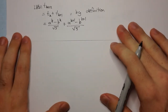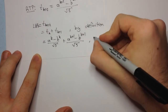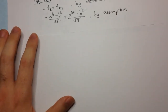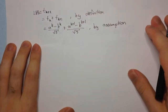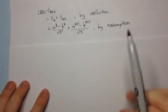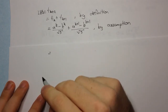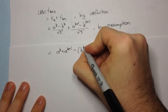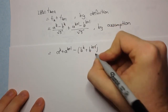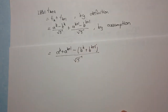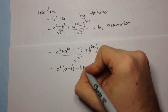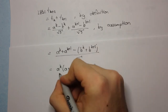Now we need to manipulate this expression to equal what we need to prove. Here we have a common factor of root 5, so we group these together. We can take out aᵏ and bᵏ in these two expressions. So we get aᵏ(1 plus a) minus bᵏ(1 plus b), over root 5. The value of a is (1 plus root 5) over 2, and the value of b is (1 minus root 5) over 2.